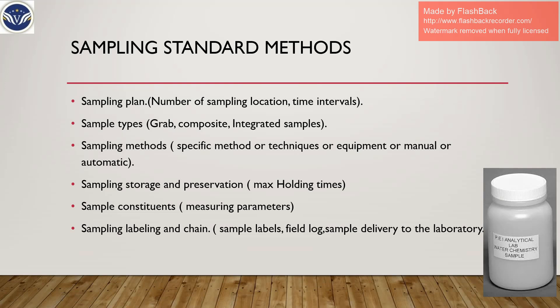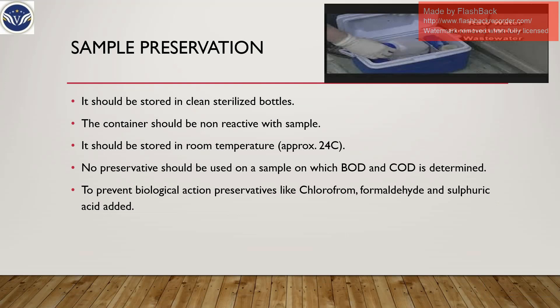Sample constituents are the measuring parameters — what type of parameters you want to measure. Sampling labels and chain of custody refer to how you number and track collected samples in series: which is the first, second, third, how you label them in the field book, how you deliver them to the lab, and how you name them. There is an example of naming a sample shown here.